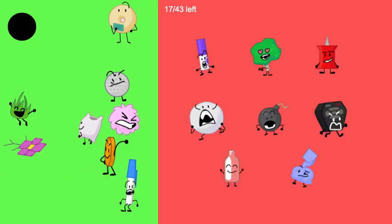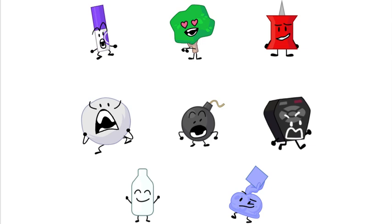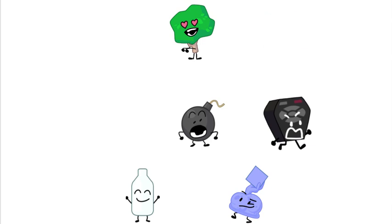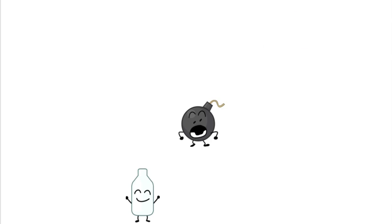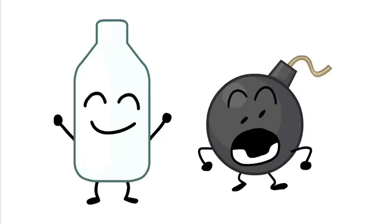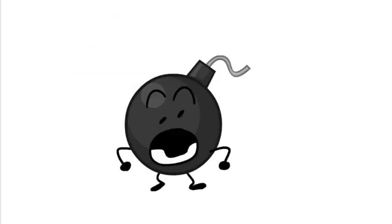The next eight up for elimination are Marker, Tree, Pin, Snowball, Bami, Remote, Bottle, and Winner. The contestants safe are Snowball, Marker, Pin, Winner, Tree, and Remote. Between Bottle and Bami, I think it would be pretty close, but Bami would leave.